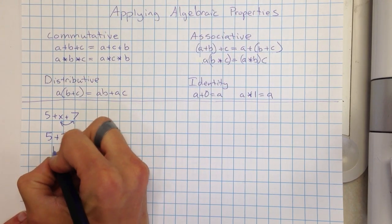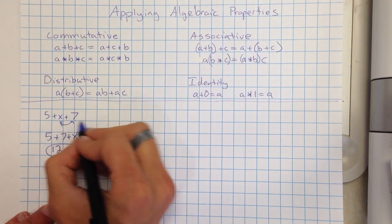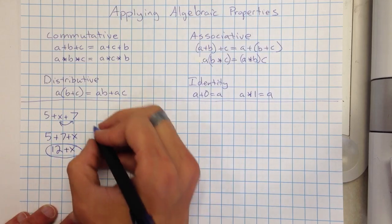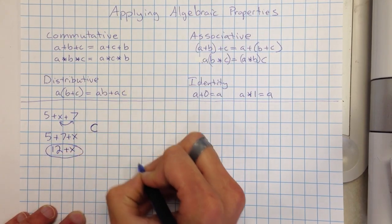Which is the same thing as 12 plus X. So I've made it a little bit simpler. I've turned it from being three things to just two things. And that was the commutative property. So I'm just going to put a C over here just to remind me that's how I did that.